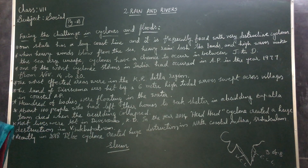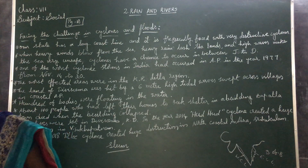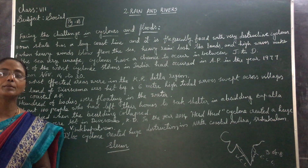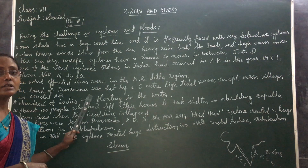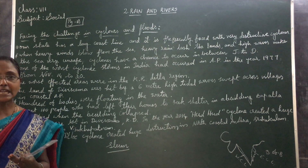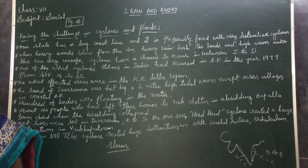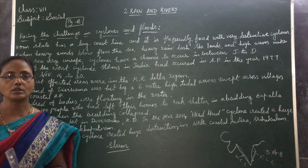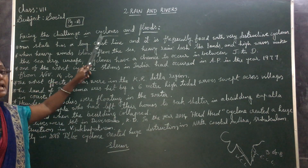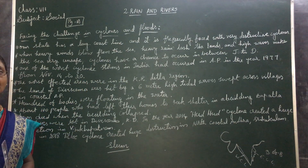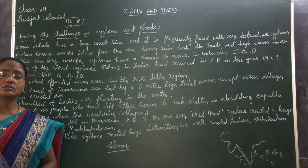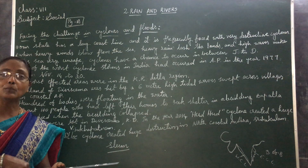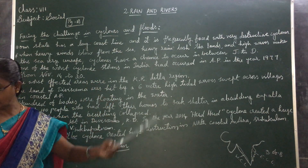Why are cyclones formed? The cyclones are formed in the sea due to the intense heating up in the summer. What is meant by a cyclone? A cyclone is a violent tropical storm in which strong winds blow and move in a circle.